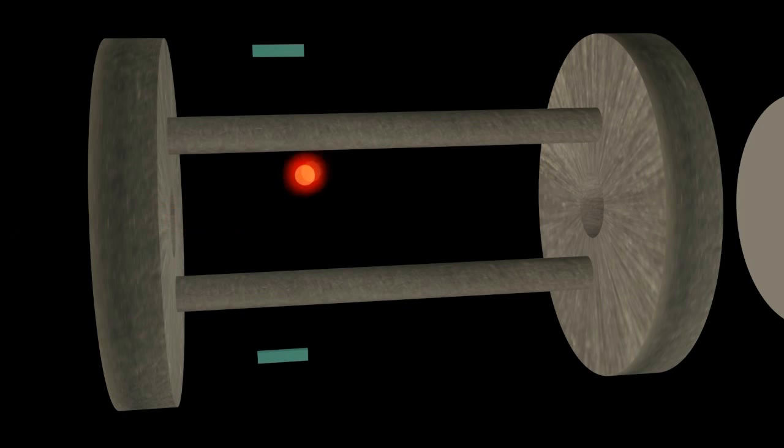Electrodes with negative DC voltage attract positive ions. The only way to prevent the positive ions from hitting the rod is to apply a suitable AC voltage that keeps them between the rods.